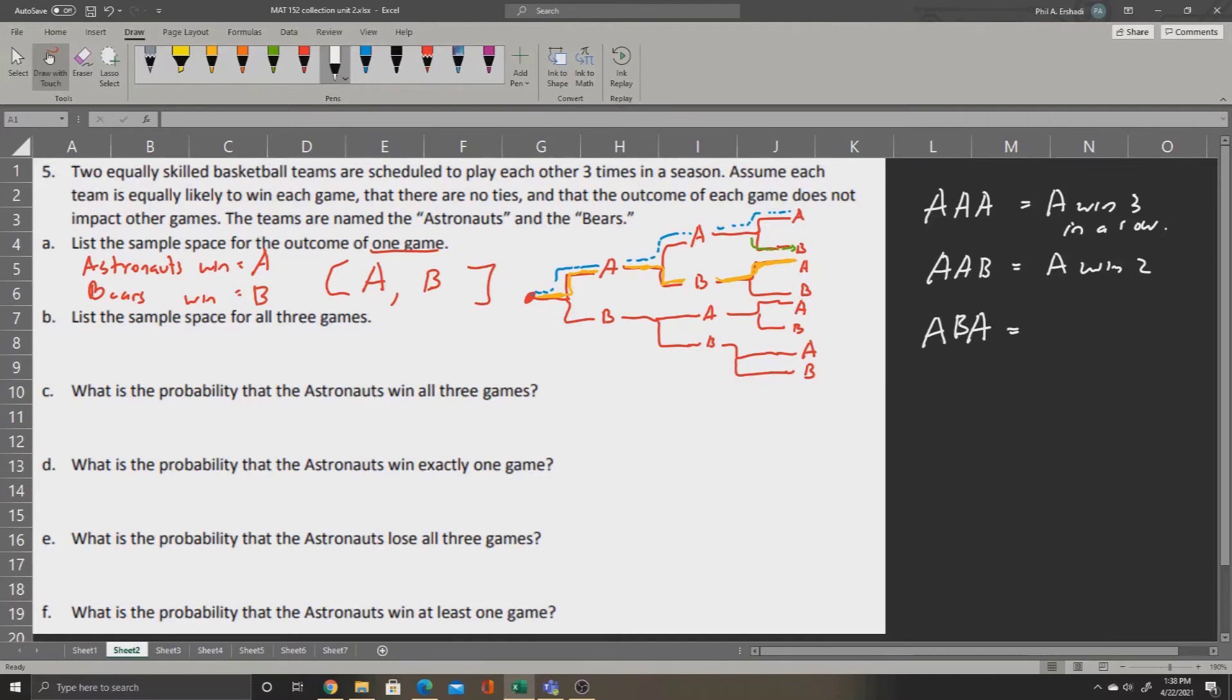Can you see that again, the Astronauts win two games? Now, if we had turned down, it would go A, B, B. In this case, the Astronauts only win one game, and the Bears win two games.